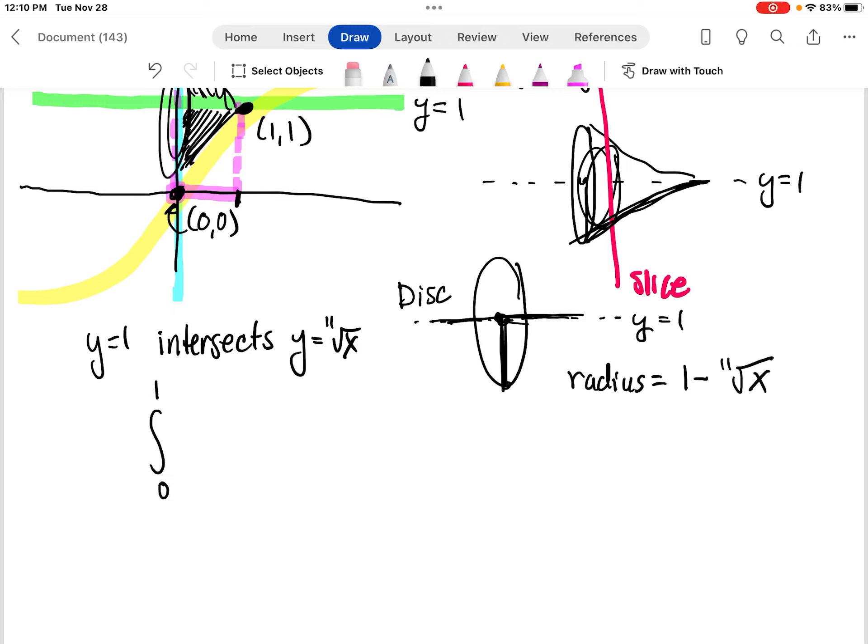All right, so when we integrate this, it's going to look like this 0 to 1. And we're doing the disk method. So we're going to do the area of the circle of all those slices. So the area of a disk is pi r squared. We identified the radius as 1 minus the 11th root of x. So this is our radius, 1 minus the 11th root of x squared dx.